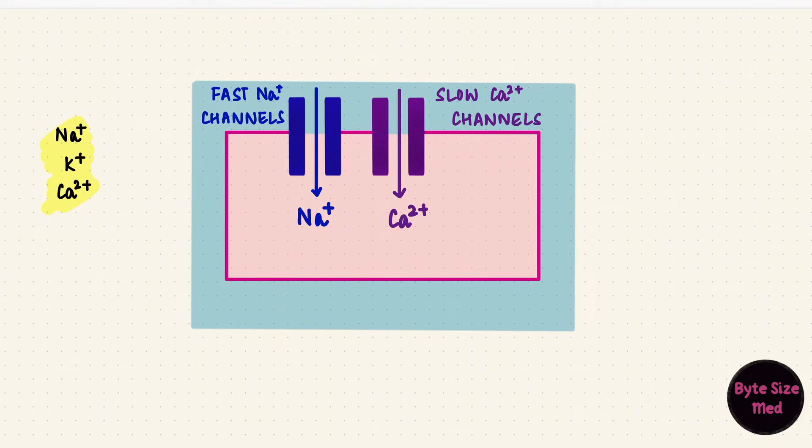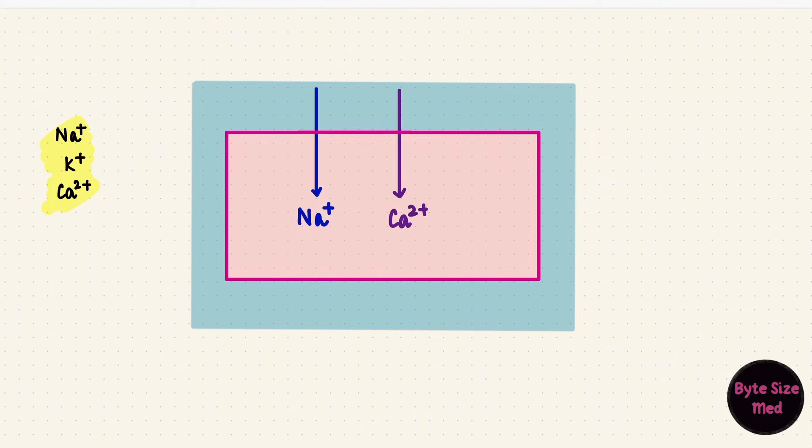The third ion is potassium, and it uses different channels at different points in the curve. But to simplify it, let's just look at the direction of current, such as the direction in which potassium moves. Potassium's gradient is such that it leaves the cell during the action potential.